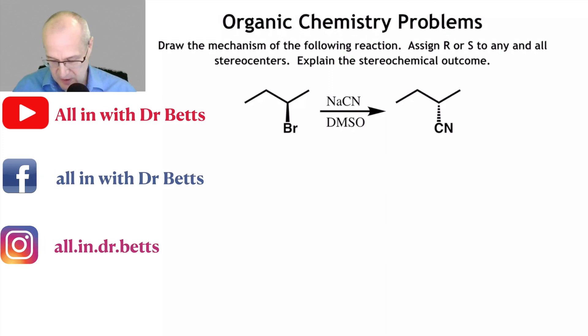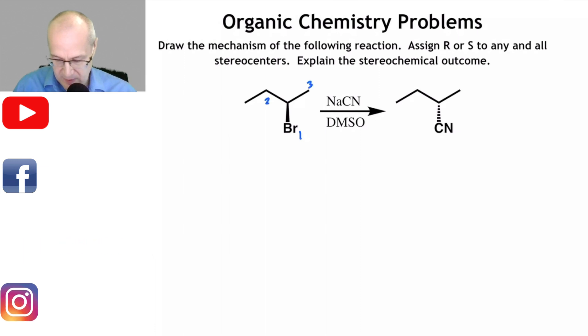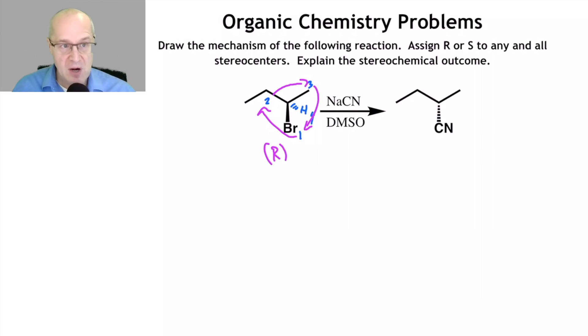Let's first assign R or S to this chiral center. That's one. This is two. That's three. And the hydrogen in the back is four. One to two, two to three, and then back to one. This is R. This is R stereochemistry.